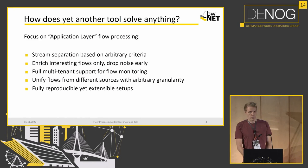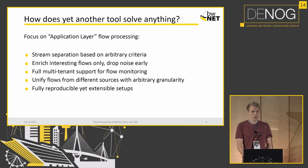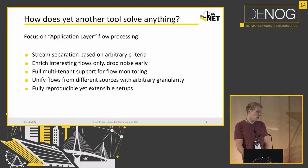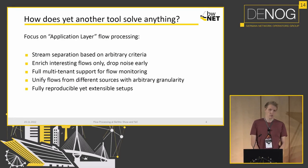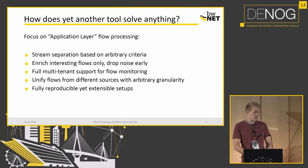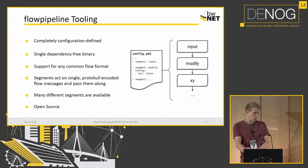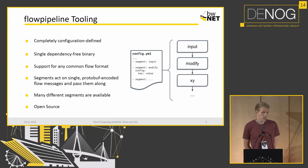We also have to unify different flow sources and different flow granularities. We might have flows that include routing information from border routers, and others that don't include any routing information. Some flows are sampled at a very high rate, others are maybe one-to-one. What we've been working on for the last year is what we call the flow pipeline tooling. It's open source — the link is at the end.